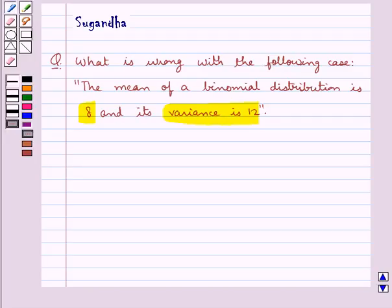We know that for a binomial distribution, mean is given as np and variance is given as npq.